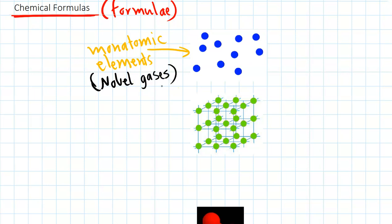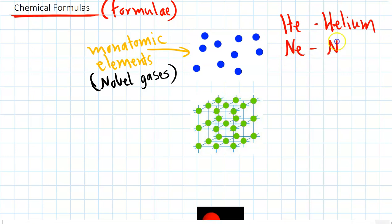So all the noble gases, their chemical formula is the same as their chemical symbol. And if you go and look at the noble gases, you have helium is the first one, which is He. You have neon, there's also argon, which is Ar, and so on, there's another few. But the chemical symbol for those is exactly the same as their chemical formula, because they just exist as one atom.